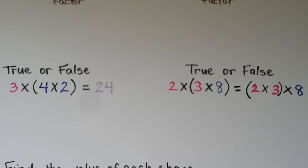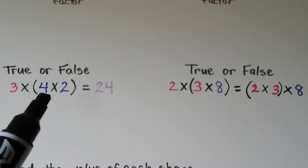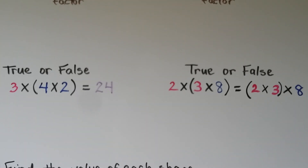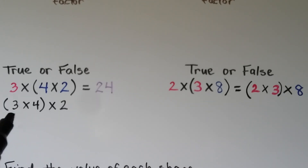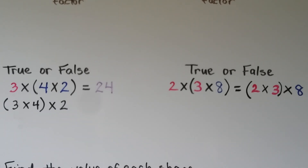Can we tell if this multiplication sentence is true or false? Is 3 times 4 times 2 equal to 24? We could change the grouping. The associative property lets us move the parentheses, and we can do (3 times 4) times 2. 3 times 4 is 12, and 12 times 2 is equal to 24. So this one is true.